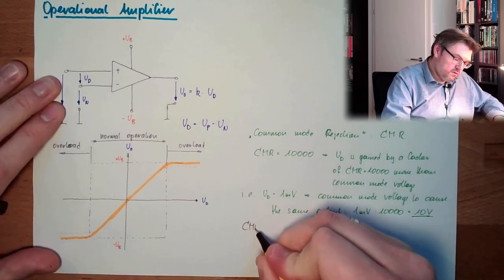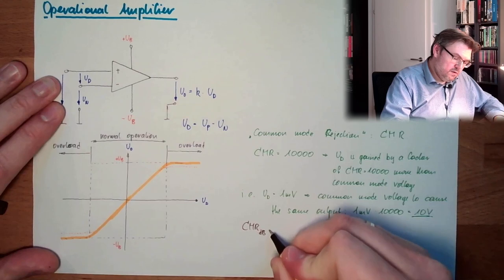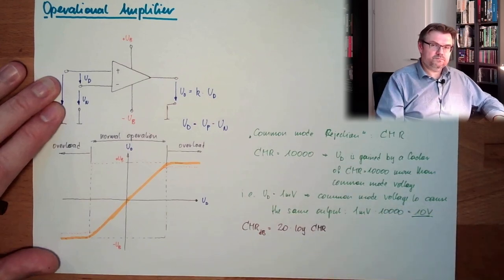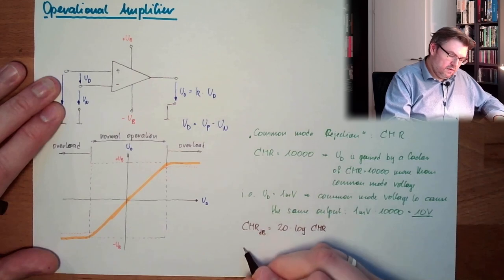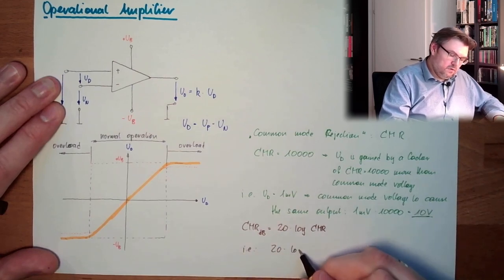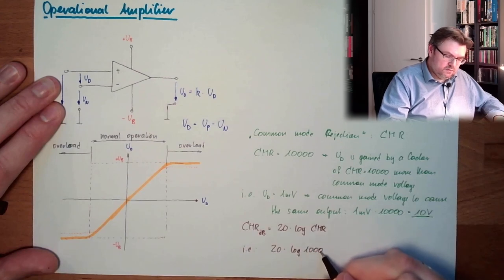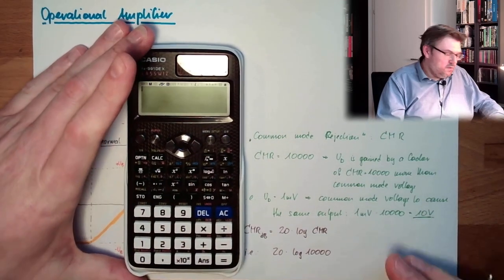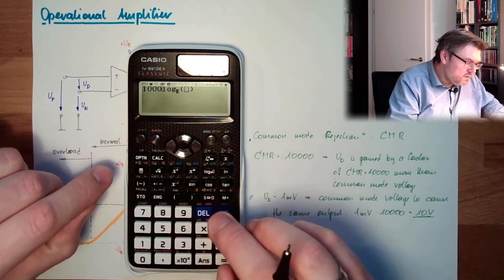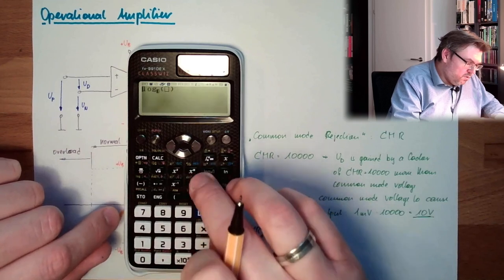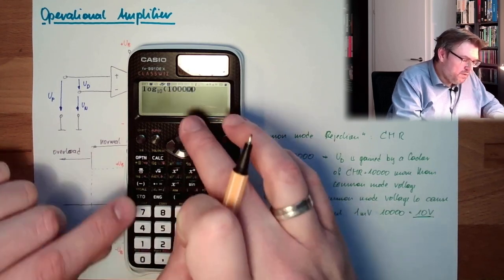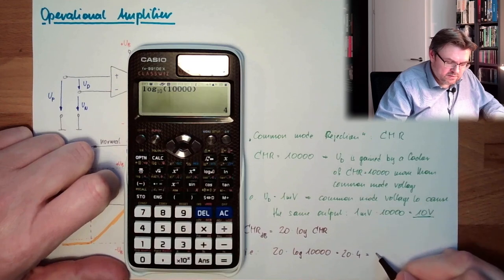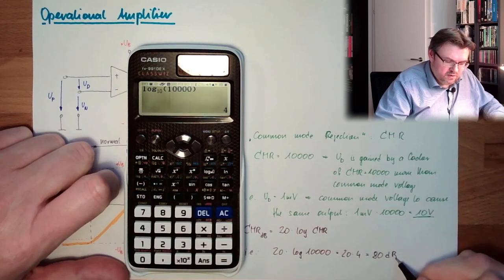Usually the CMR is not given as such number, it's given in decibel. So the common mode rejection in decibel is 20 times logarithm of the common mode rejection. In our case, in example, 20 times logarithm of 10,000, and you can try it. Type in 10,000, press the LOG button, LOG base 10 of 10,000. I mean, it should be 4, it's 4. So this is 20 times 4, and this is 80 decibel.